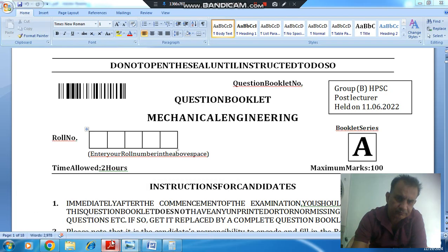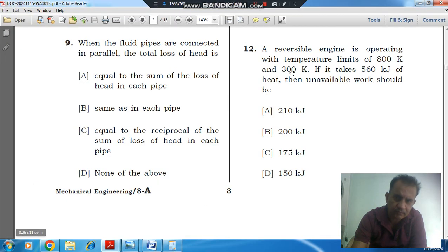Question number 12 is: a reversible engine is operating with temperature limits of 800 K and 300 K. If it takes 560 kJ of heat, then unavailable work should be option A, 210 kJ, option B, 200 kJ,